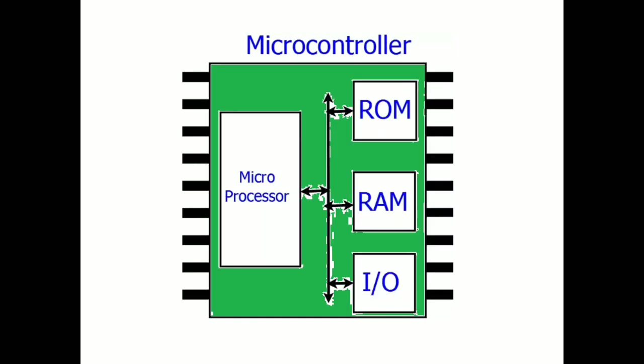In a microcontroller, a microprocessor has been put in, and apart from that, RAM, ROM, and I/O have been added. So you can say the microcontroller is the next version of the microprocessor.